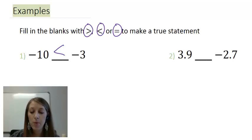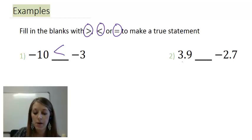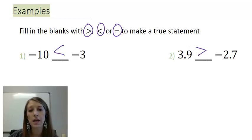Example 2, 3.9 compared to negative 2.7. Negatives on the left, positives on the right. So that means my positive 3.9 is to the right of my negative 2.7. So my inequality symbol here that gets inserted is the greater than.